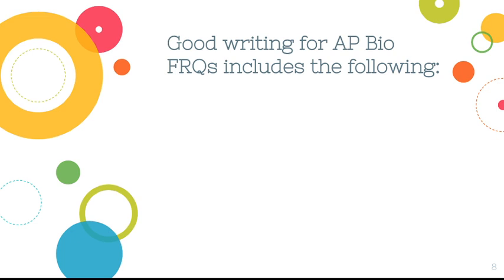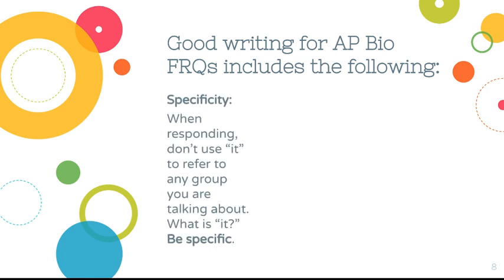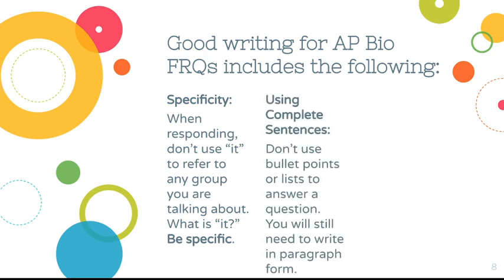Good writing for AP Bio FRQs requires specificity. Don't use vague terms like 'it' to refer to anything you're discussing — name it. If they're referring to the rate of change of something, say 'the rate changes in the positive direction.' If they're referring to a specific organism, name that organism. Don't use nebulous terms like 'they' or 'it.'